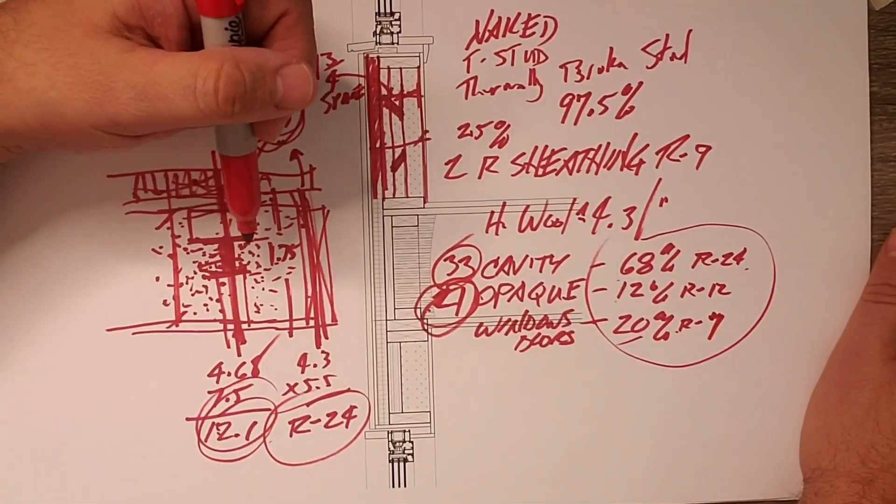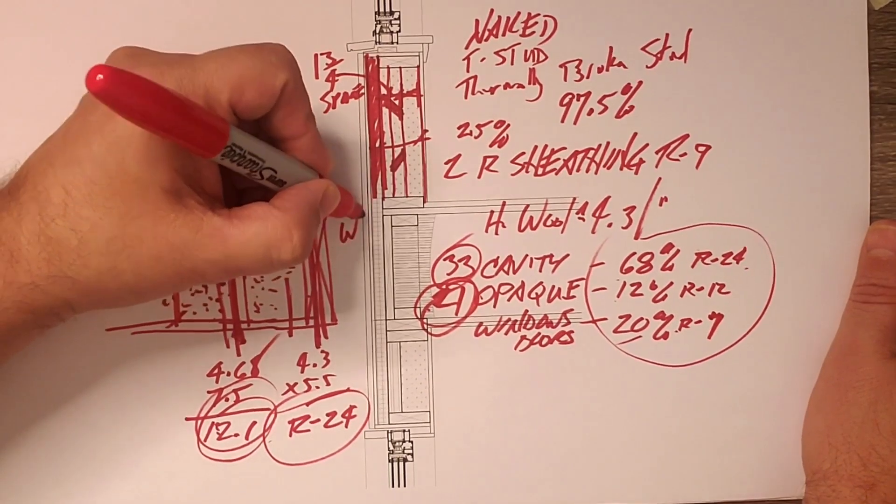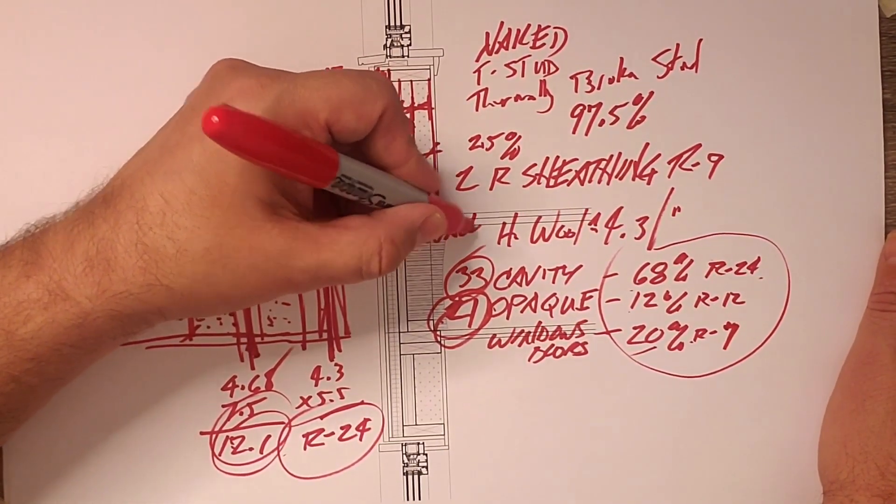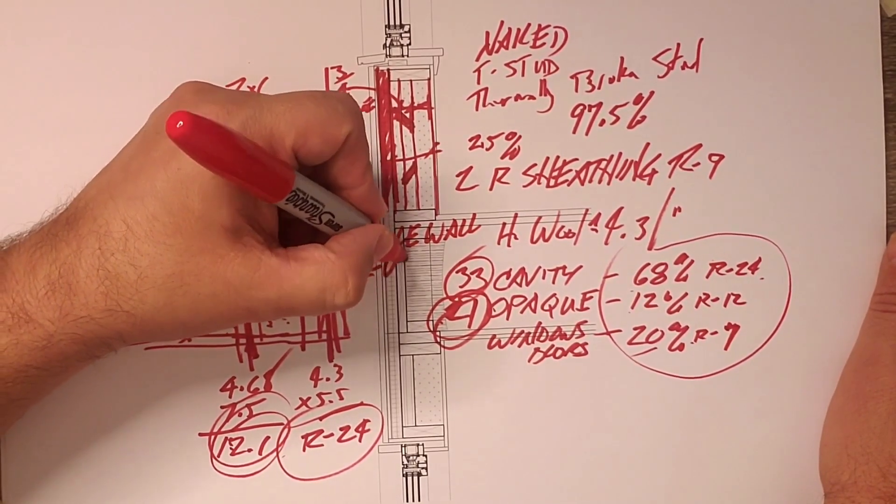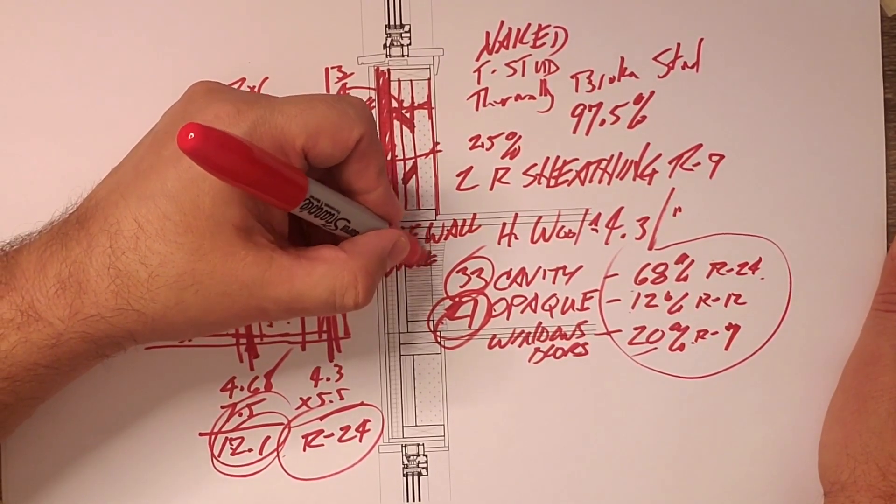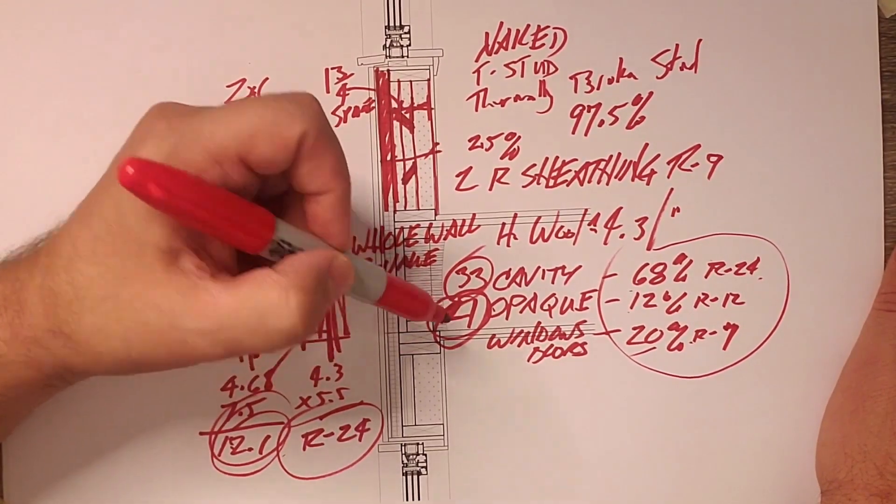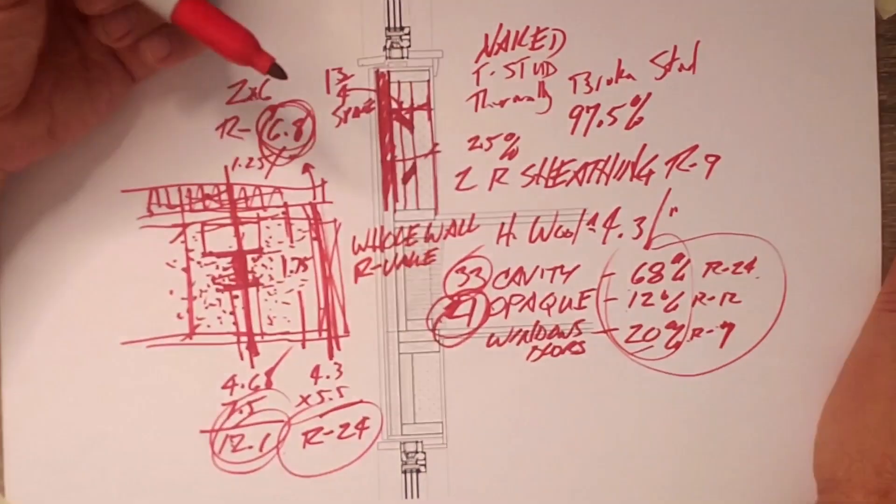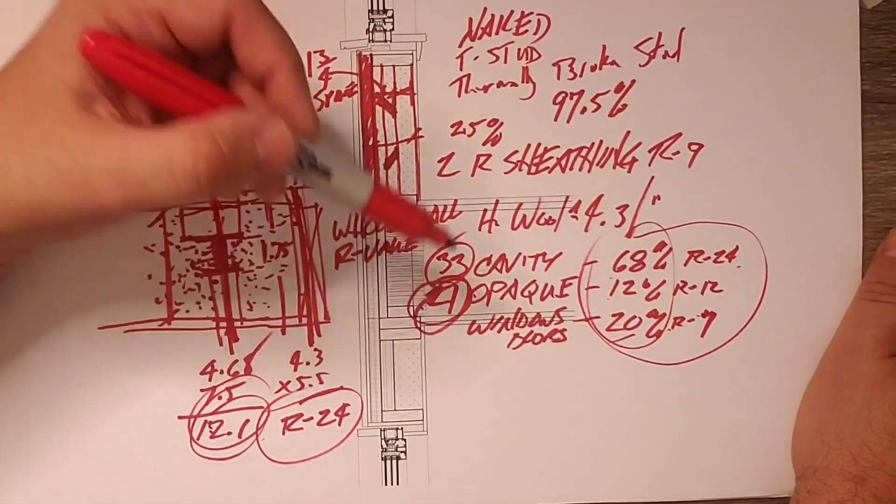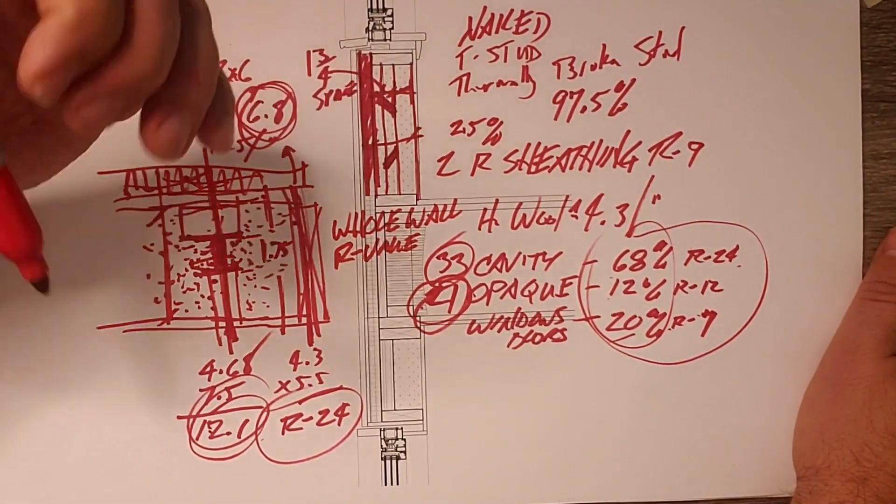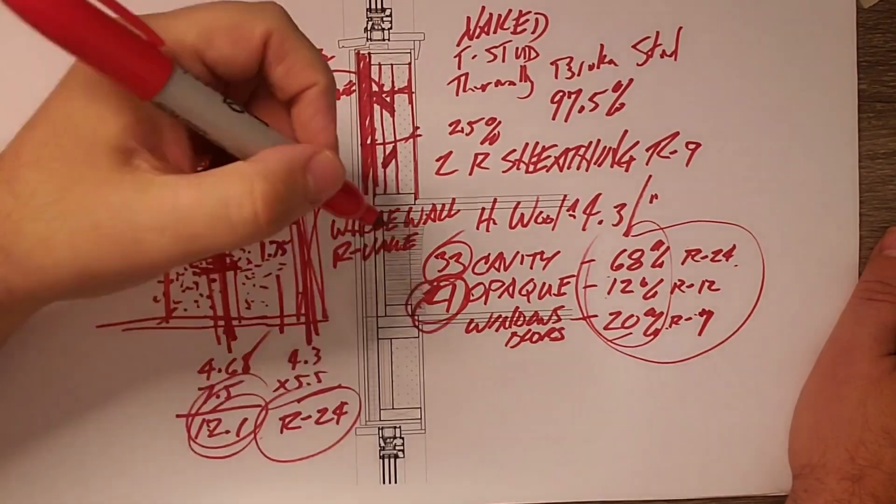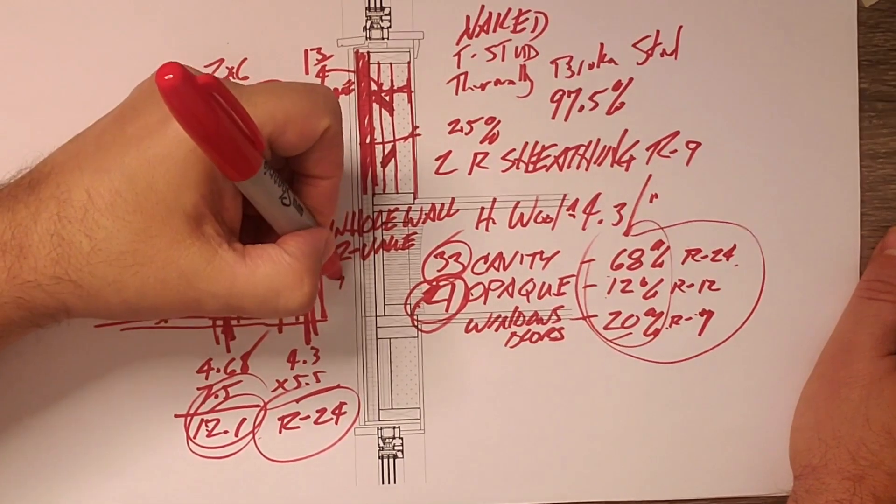And the whole wall R value is when we take the 33 the 21 and the 7 and normalize them across these percentages. If I had to guess we're probably somewhere in the R19 ish range maybe 20 for whole wall R value.